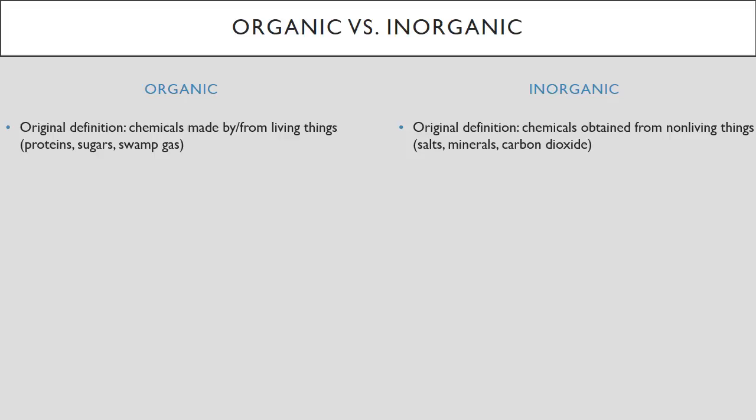But then somebody came along and eventually someone came and artificially produced a chemical called urea in a chemical lab. This rocked the chemical world. Suddenly organic chemicals could be made without needing living things. So of course we needed new definitions.